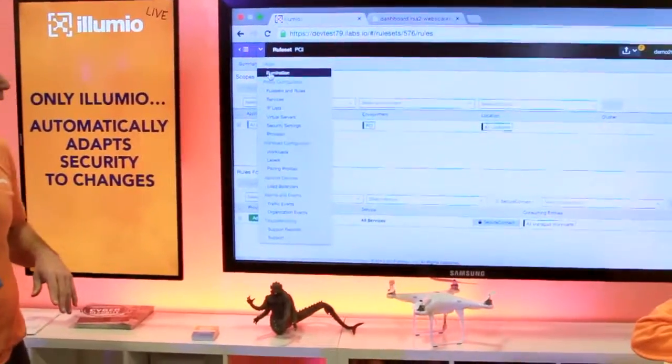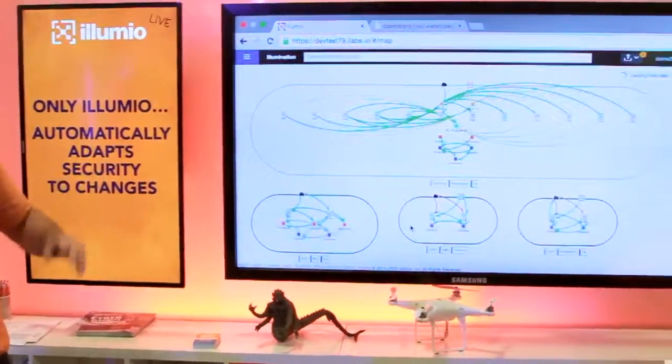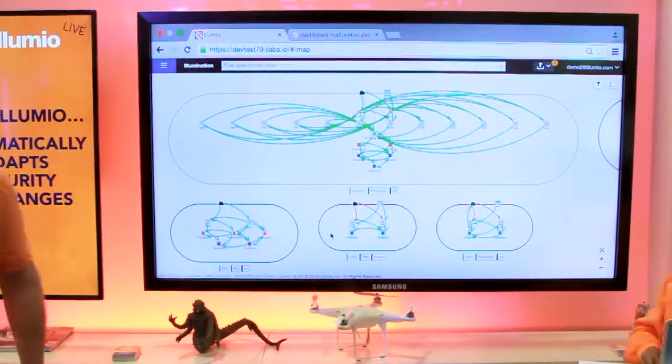So what should have happened? Yeah, there it goes. So Amazon just forked up 10 new instances of the web tier.